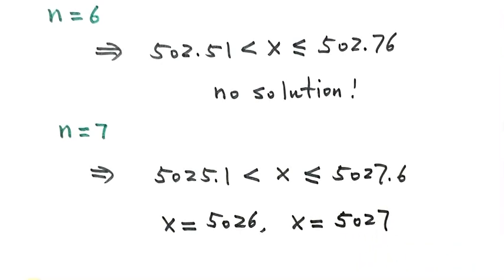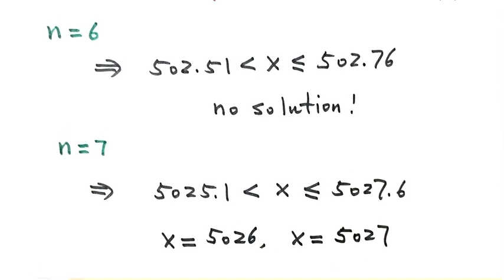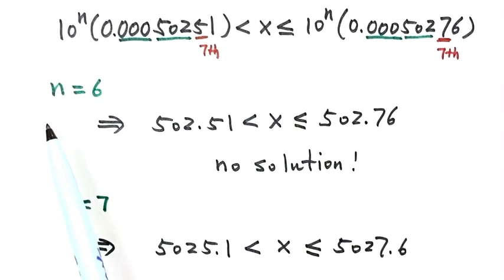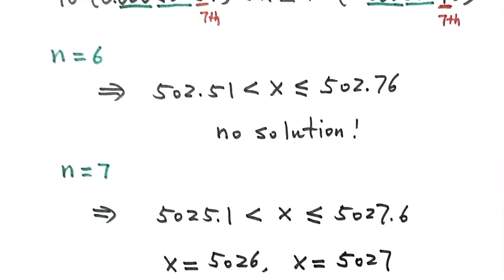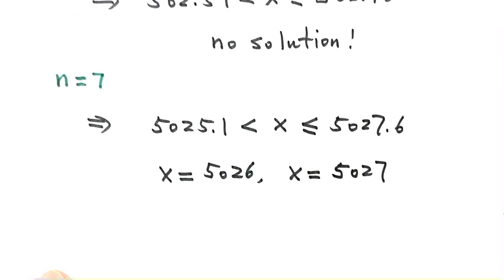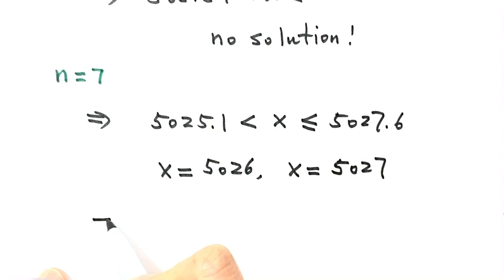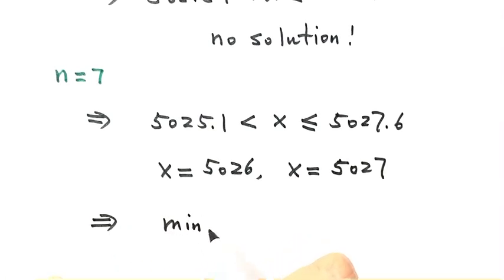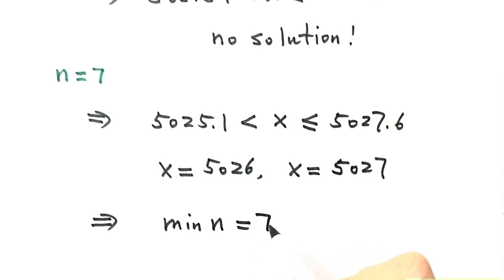So when n equals 7, there are two integer solutions for the equation. Because when n equals 6 there is no solution, the minimum natural number n for which the equation has an integer solution is 7. Seven is the answer to this question. Thanks for watching.